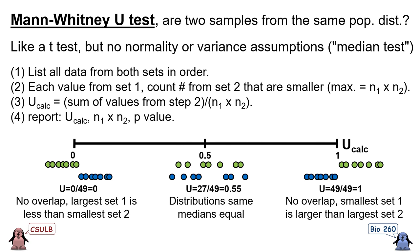Third, we add up all the values from step 2 and compare this to n1 times n2 — the sample sizes for the two datasets — which would be the maximum value we could have gotten. If every value in dataset 1 was smaller than every value in dataset 2, the U value would be 0. If every value in dataset 1 was larger than every value in dataset 2, the U value would be 1. When there's a lot of overlap, we get intermediate U values. The fourth step is to calculate the p-value of getting a U value as large or small as we do, and that's used to accept or reject the null hypothesis that the samples come from the same population distribution.